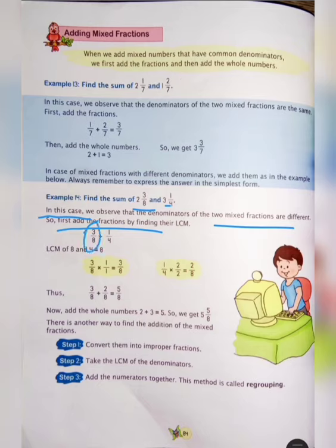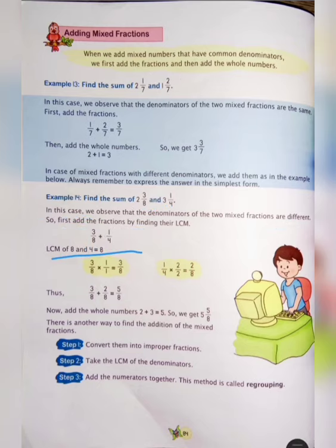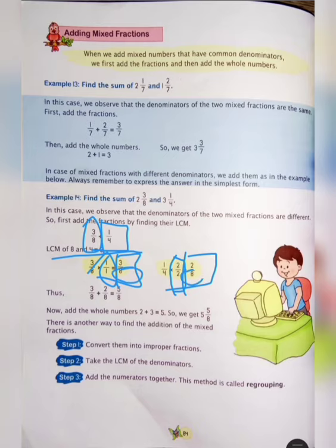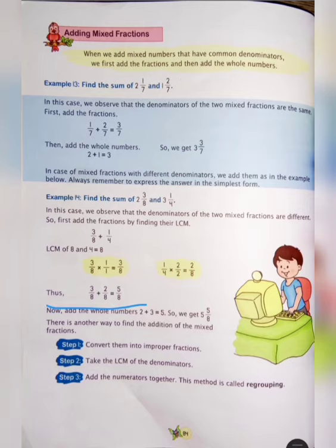3 upon 8 plus 1 upon 4. LCM of 8 and 4 is equal to 8. Now, 3 upon 8 multiplied by 1 upon 1 is equal to 3 upon 8, and 1 upon 4 multiplied by 2 upon 2 is equal to 2 upon 8. So now we have the same denominator 8. Thus, 3 upon 8 plus 2 upon 8 is equal to 5 upon 8.